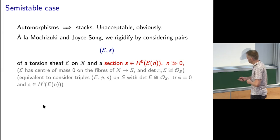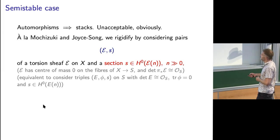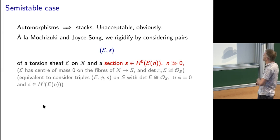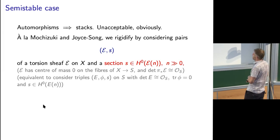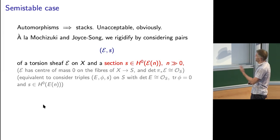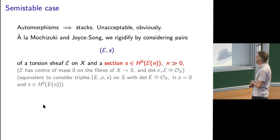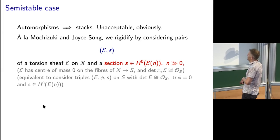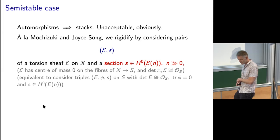We have the usual conditions because we're doing SU(r) instead of U(r) Vafa-Witten theory: centre of mass zero, and determinant trivial or fixed. Or you can phrase it in Higgs pair language — you now have triples: your Higgs pair (E, φ) and then a section of E. It's the same data.